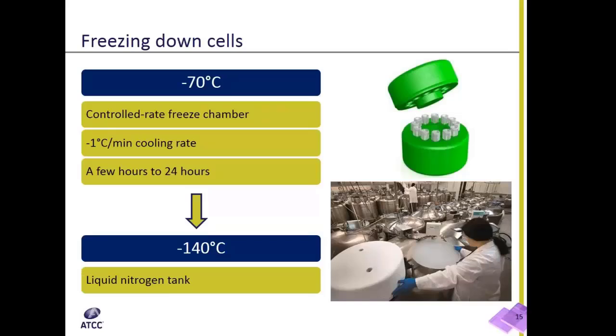Freezing cells is typically a two-stage process in which cells are incubated for some time at around minus 70 degrees Celsius before being stored permanently at minus 140 degrees Celsius.